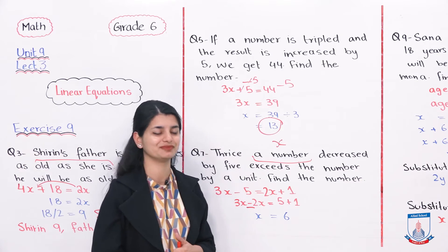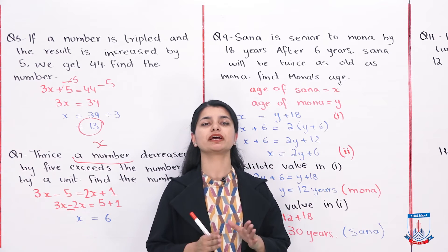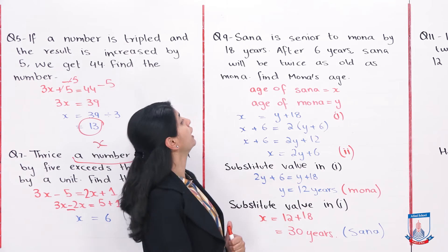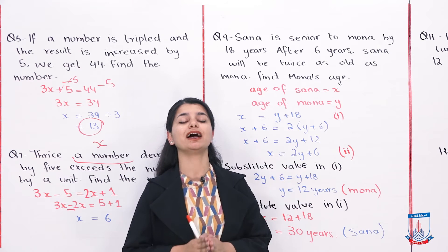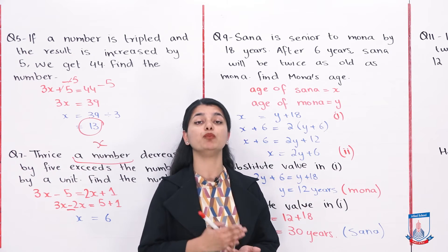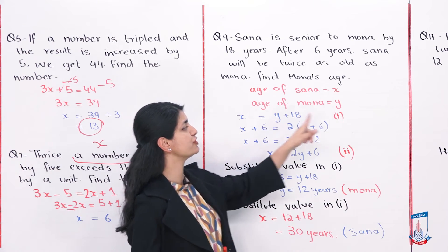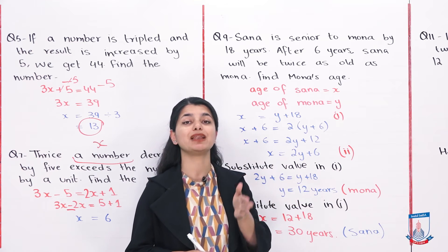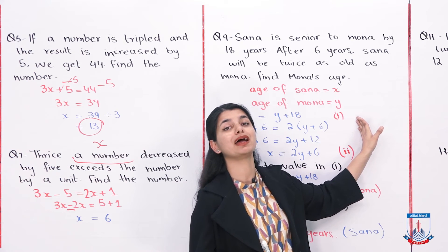Now let's look at question number 9, probably the most difficult because we use 2 variables. Sana is senior to Mona by 18 years. After 6 years, Sana will be twice as old as Mona. Find Mona's age. We don't know both ages, so we let Sana's age be x and Mona's age be y. Since Sana is 18 years older, we get our first equation: x equals y plus 18.